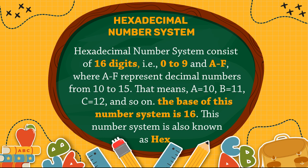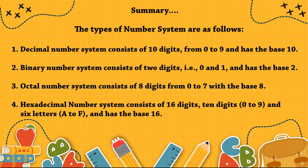This number system is also known as HEX. To recap the types of number systems: decimal consists of 10 digits from 0 to 9 with base 10; binary consists of 2 digits, 0 and 1, with base 2; octal consists of 8 digits from 0 to 7 with base 8; and hexadecimal consists of 16 digits — 10 digits 0 to 9 and 6 letters A to F — with base 16.